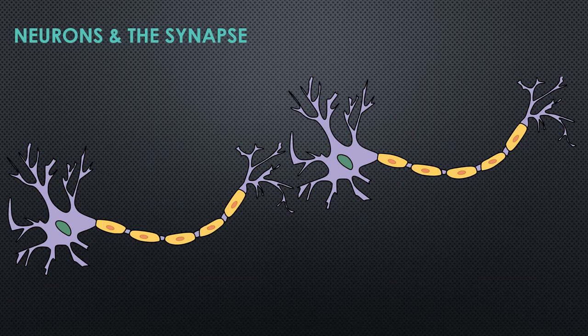How do we relate thinking to memory? This is where the gaps between neurons become important. These gaps, between one end of a neuron and the other, are known as synapses. Synapses are important because we believe this is where memories are stored at a cellular level.